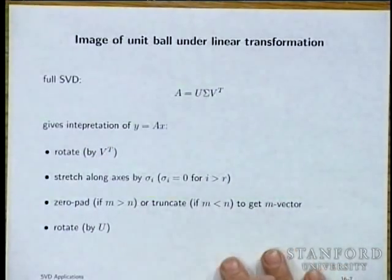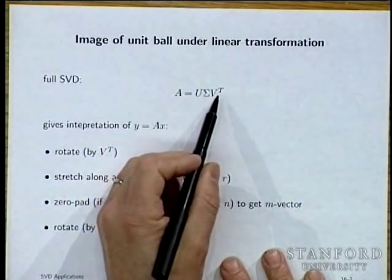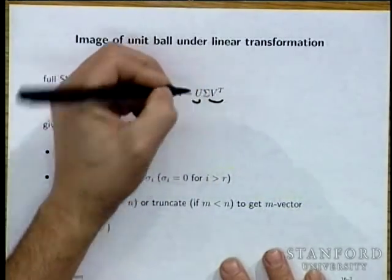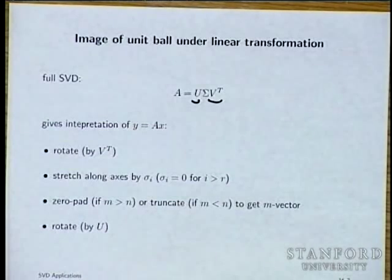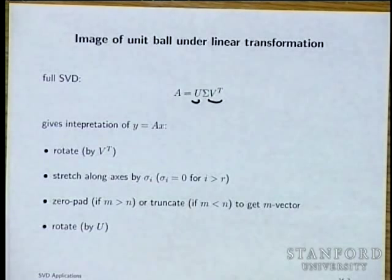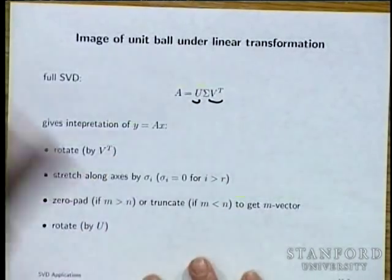The geometric interpretation: A = U Σ V^T. Orthogonal matrices either rotate or reflect — they preserve angles, distances, and norms. They are isometries. By V and U — they're like rotations.